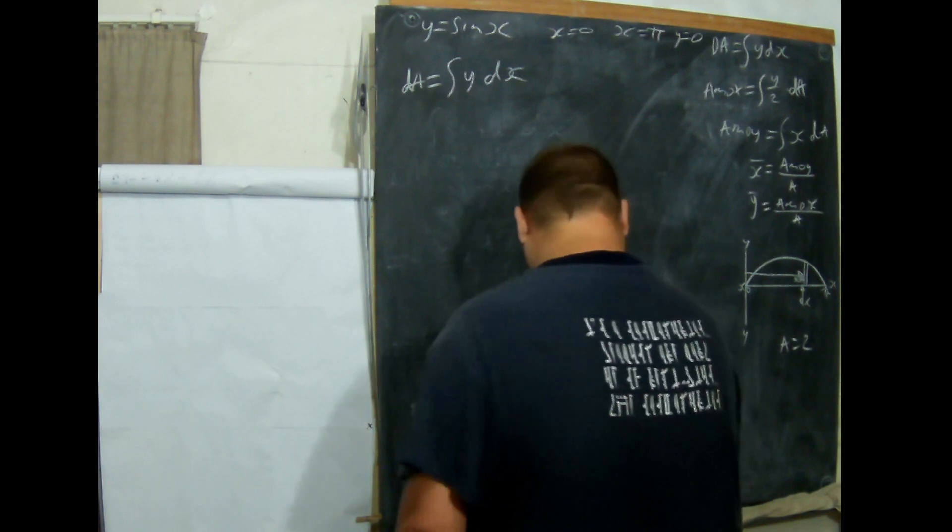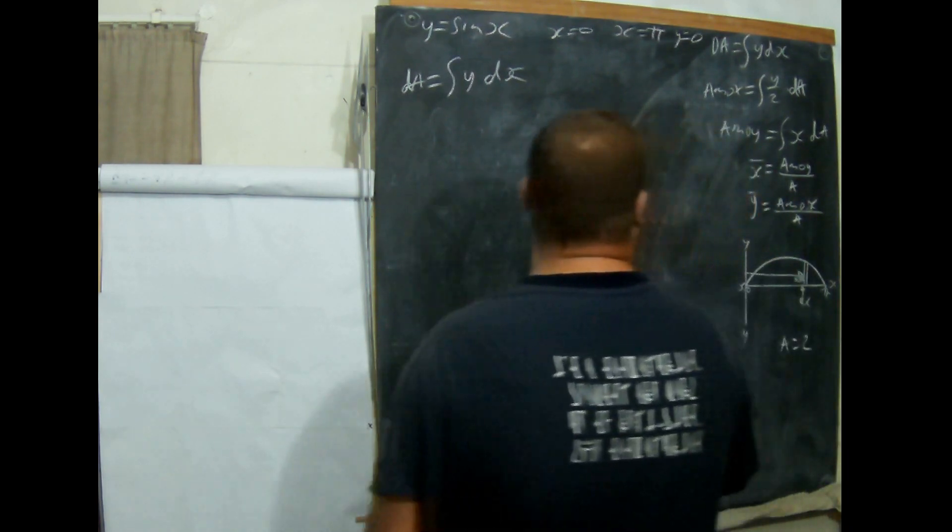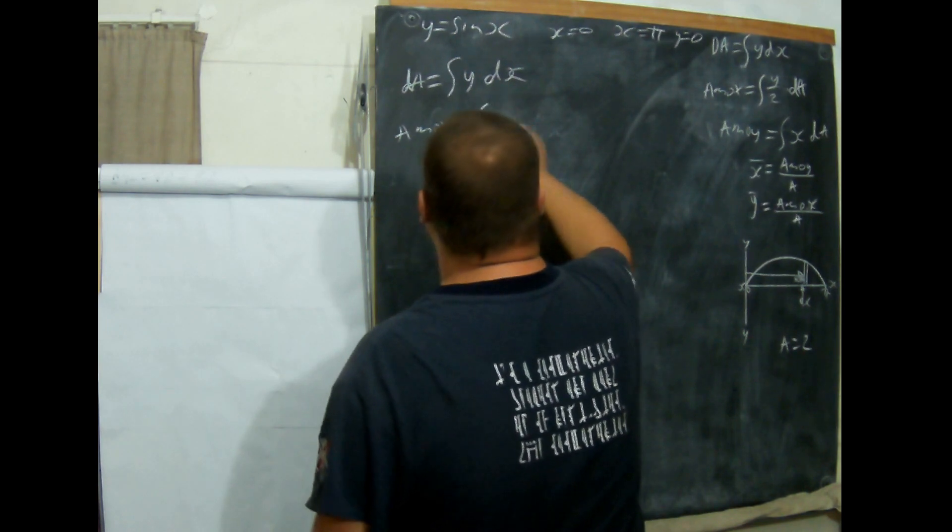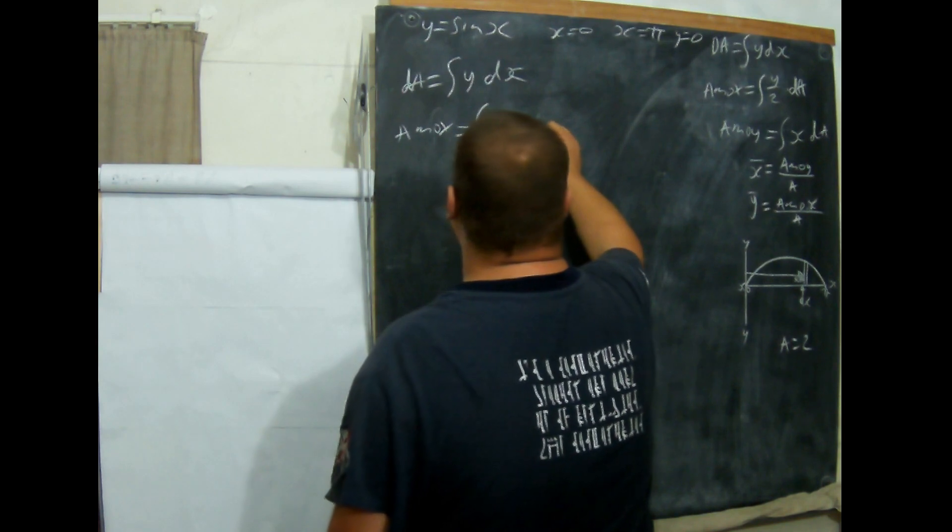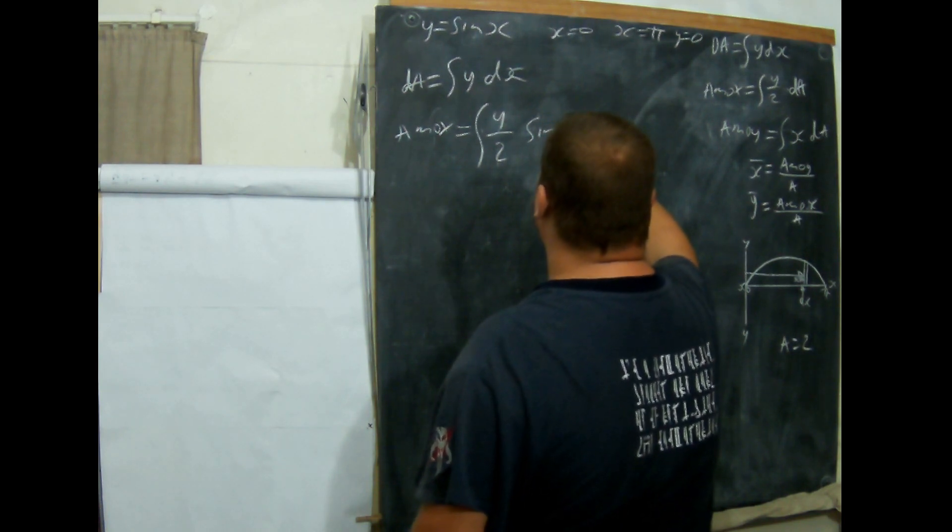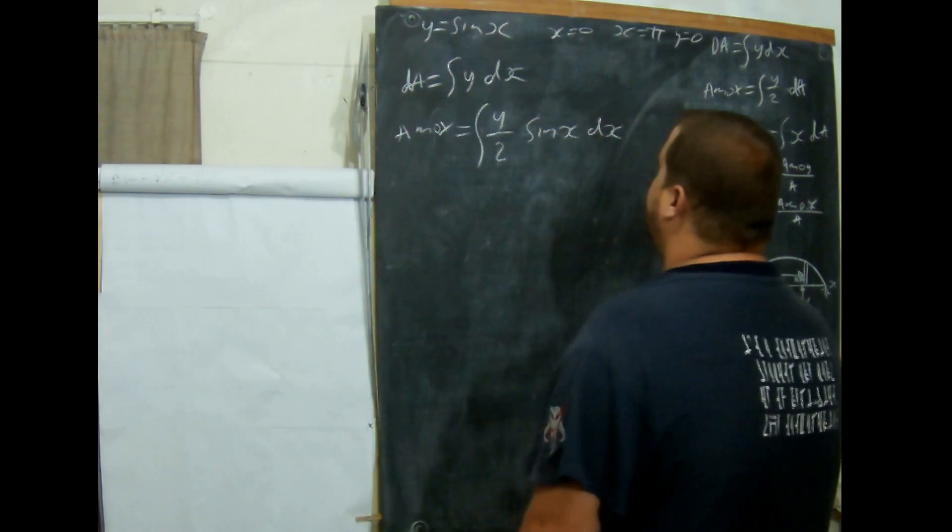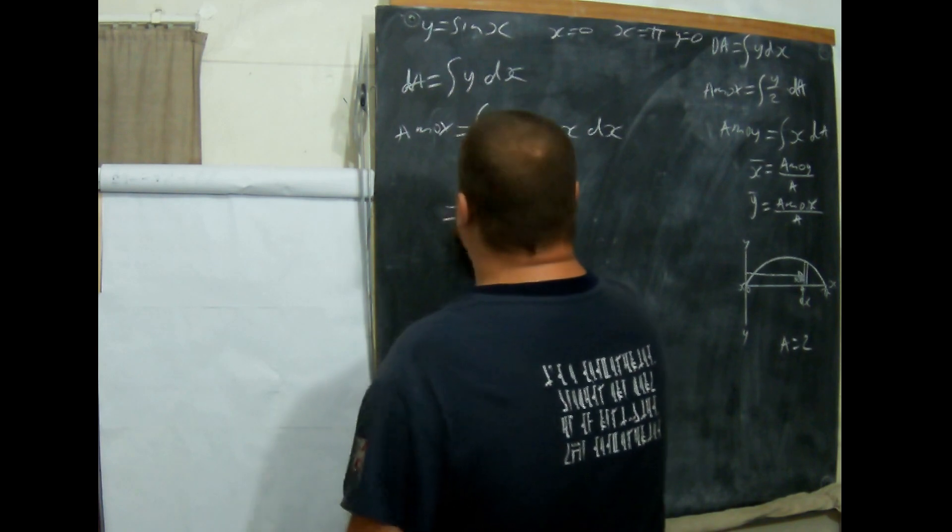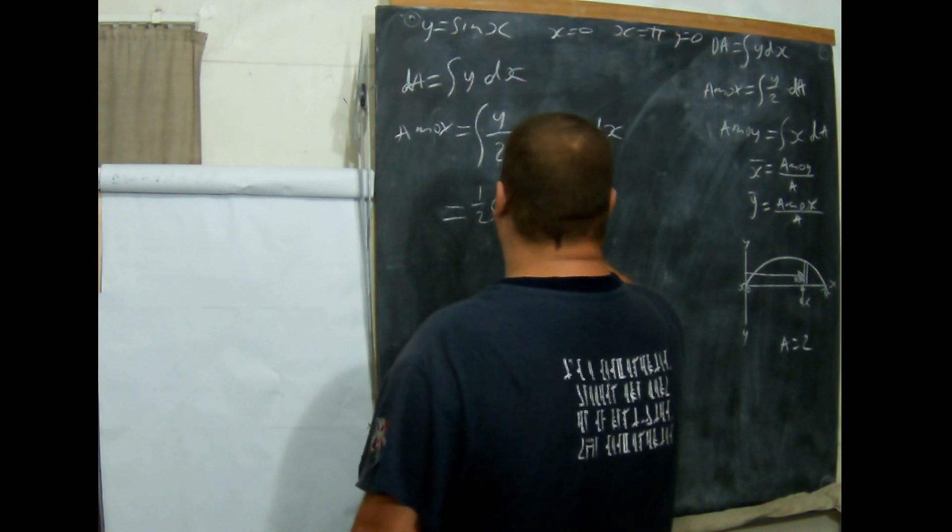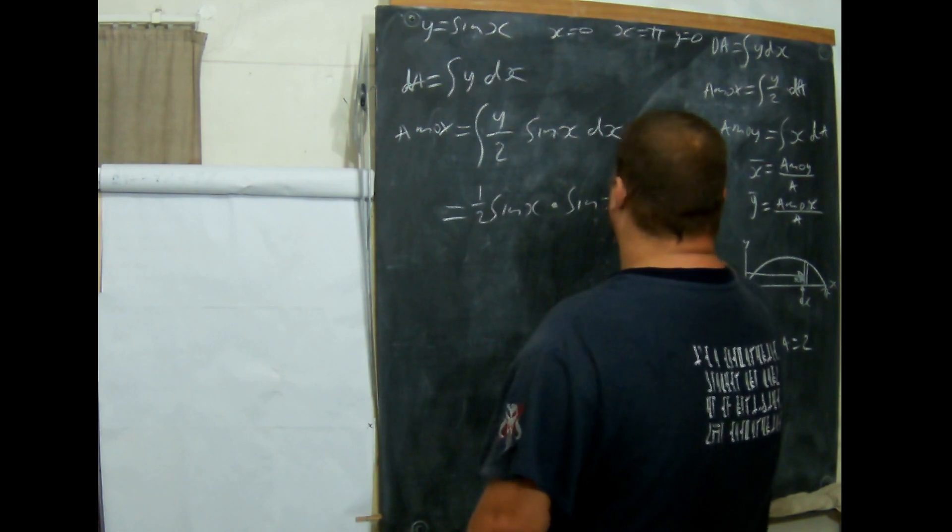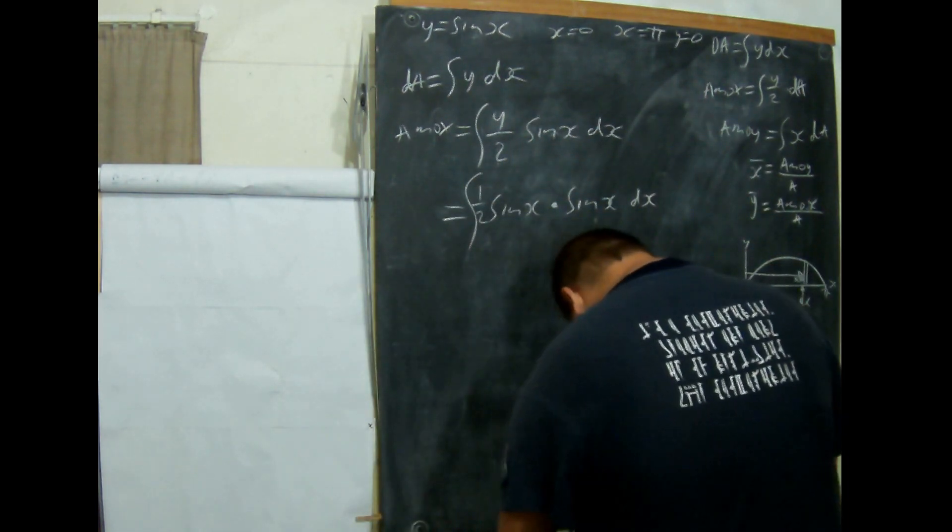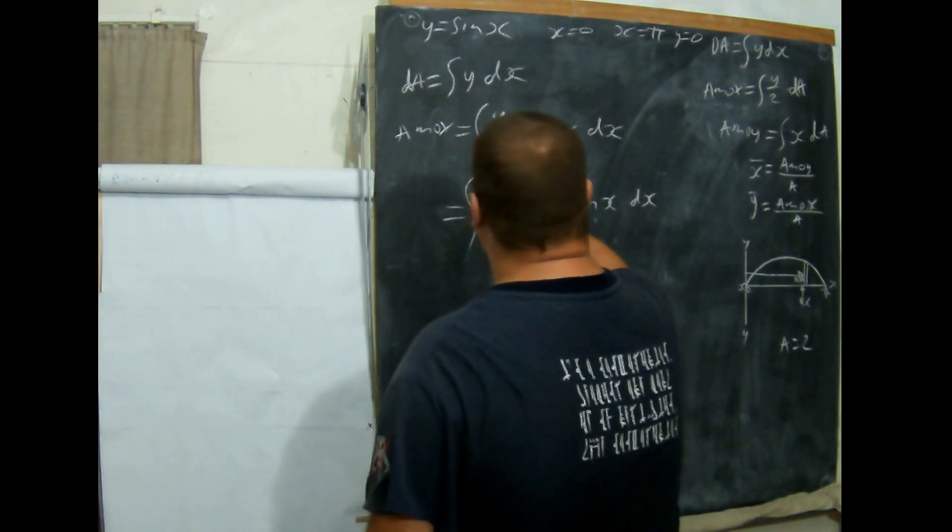A M O X equals the integral of Y over 2 dA. And dA is sin x, so it's sin x dx. What we need to do is a half sin x times sin x dx, and there's an integral. We're still working with an integral from pi to 0.